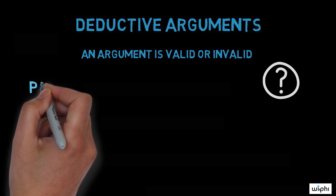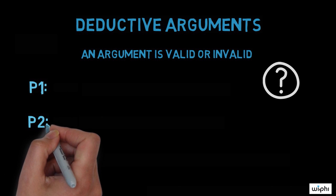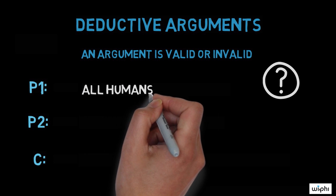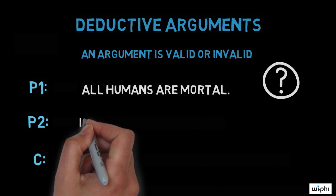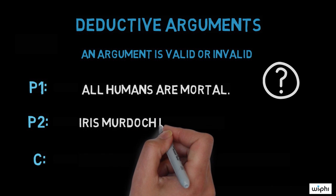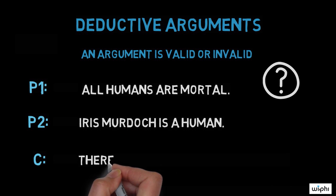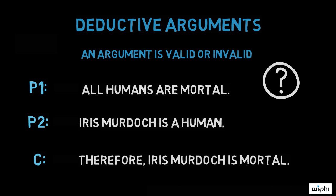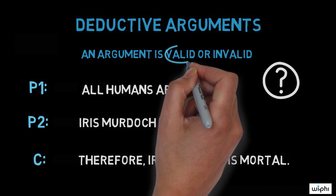Well, suppose that you make the following argument. In here, I'll use P's to stand for premises, and I'll use a C to stand for the conclusion. P1: All humans are mortal. P2: Iris Murdoch is a human. C: Therefore, Iris Murdoch is mortal.